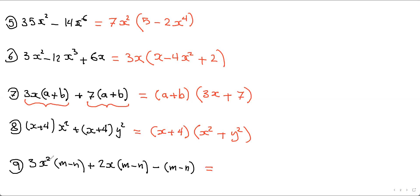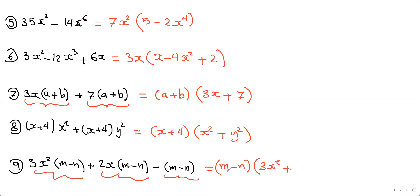In this example, all three terms have (m − n), and there are three terms separated by two signs. So (m − n) is the greatest common factor. Dividing the first term by (m − n) leaves 3x². Plus 2x(m − n) divided by (m − n) leaves 2x. Then, importantly, you must still write the minus sign — (m − n) divided by (m − n) cancels, but it gives you 1, and you must write that 1.